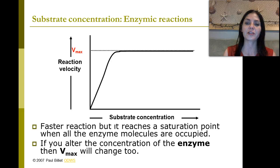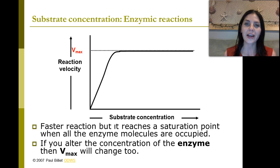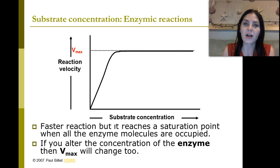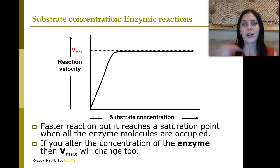If you alter the concentration of the enzyme, then the maximum velocity will change too. If I had a higher enzyme concentration, that could affect it as well. If there are more enzymes than substrates, the level of activity is going to level off as well.